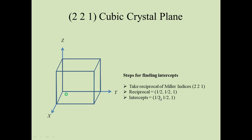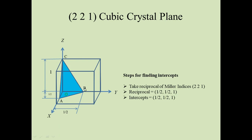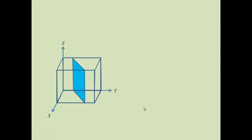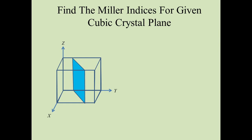1/2 is the intercept along the x-axis, 1/2 is the intercept along the y-axis, and 1 is the intercept along the z-axis. This is the distance 1/2 of this edge along the x-axis up to point A, and this is the distance 1/2 along the y-axis up to point B. The intercept along z becomes 1 at point C. Joining A to B, B to C, and C to A gives the (221) cubic star plane.